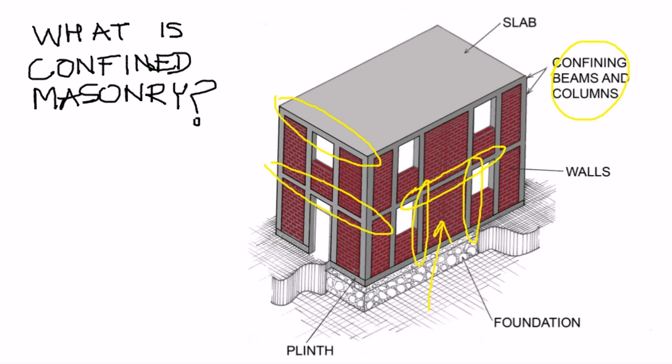To summarize, key elements of confined masonry building are masonry walls, reinforced concrete or RC tie columns and RC tie beams.